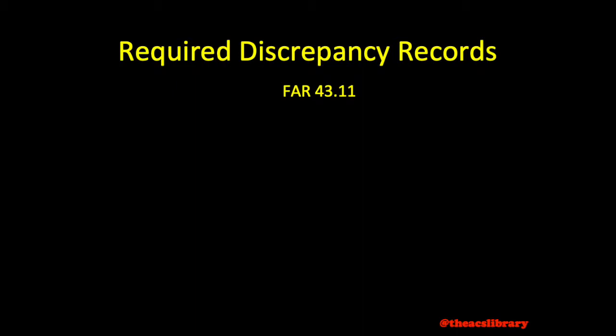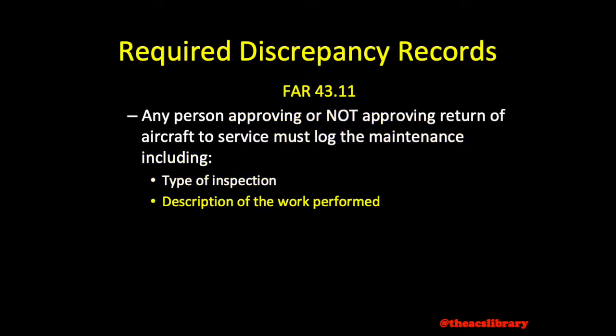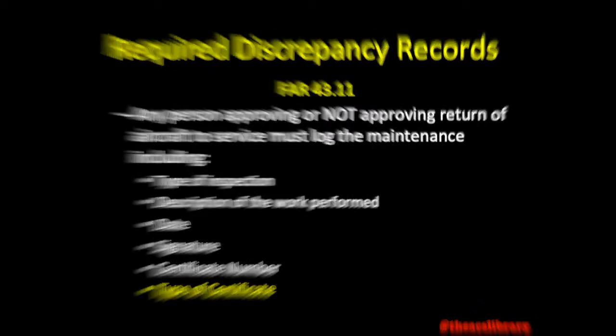FAR 43.11 states that any person approving or disapproving return of aircraft to service must make an entry in the maintenance record including the type of inspection and a brief description of the work performed, the date, the person's signature, certificate number, and type of certificate held.